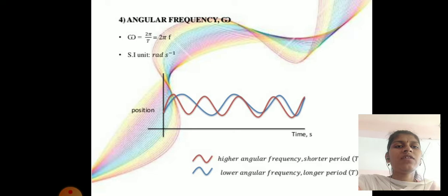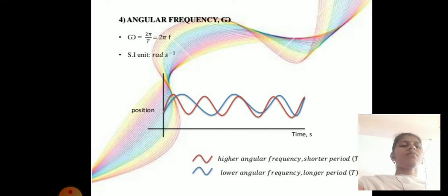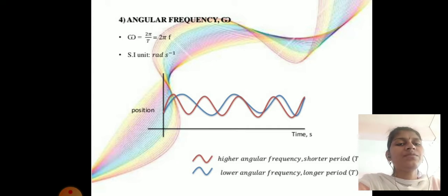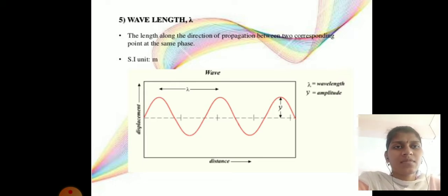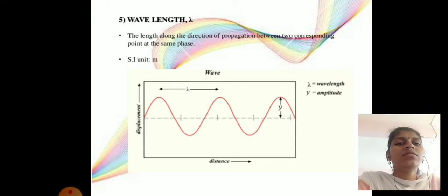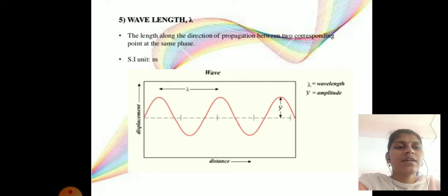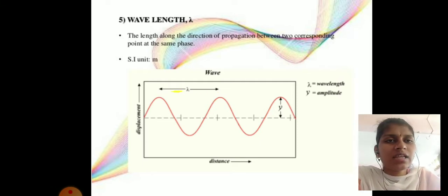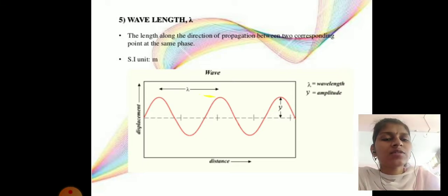Next parameter is angular frequency, denoted by ω. ω = 2π/T = 2πf. The unit is radians per second. Next parameter is wavelength, denoted by λ: the length along the direction of propagation between two corresponding points at the same phase.